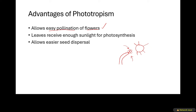Second, the leaves receive enough sunlight for photosynthesis. Because this plant has bent towards the sunlight through phototropism, the leaves are now exposed to more light. If leaves receive more light, photosynthesis will take place more easily, since light is a requirement for photosynthesis. So when the leaves are exposed to more sunlight, there will be more photosynthesis.